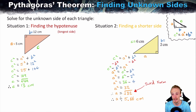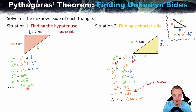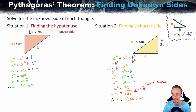To summarise, there are two situations: finding the longer side (the hypotenuse) using C squared equals A squared plus B squared, or finding a shorter side using A squared equals C squared minus B squared. You won't always get a perfect whole number — sometimes you'll need to round using a calculator, and sometimes the question will ask you to leave the answer in surd form. Always include units in your final answer.